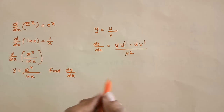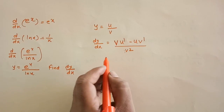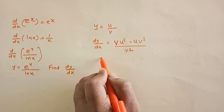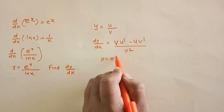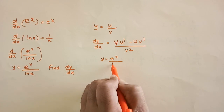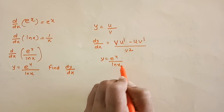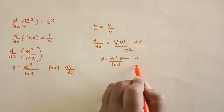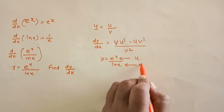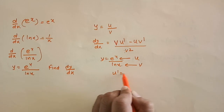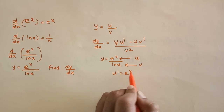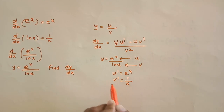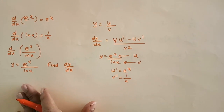To differentiate y equals e to the power x over ln x, consider e to the power x as u and ln x as v. Then u dash is e to the power x, and v dash is 1 over x.